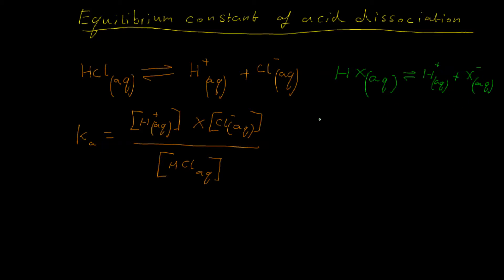Now this translates into the equation for the equilibrium constant of acid dissociation, Ka, which is equal to H plus aqueous, or the concentration of, I should say, times the concentration of X minus aqueous, divided by the concentration of HX aqueous, and that's the concentration.